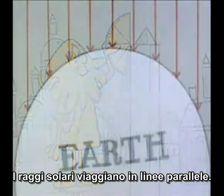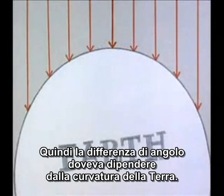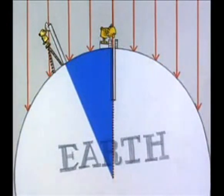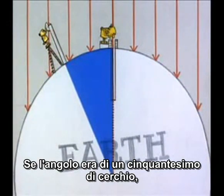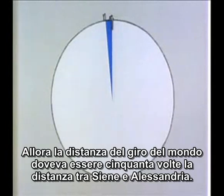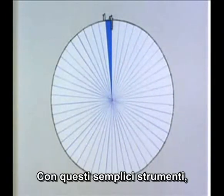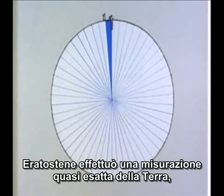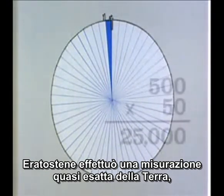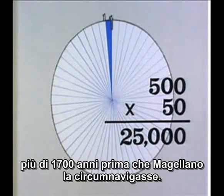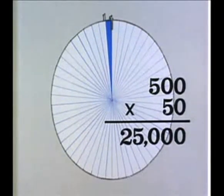Sunbeams travel in parallel lines, so the difference in angle had to result from the curvature of the earth. If the angle was 1/50th of a circle, then the distance around the world must be 50 times the distance from Alexandria to Cyene. With these simple tools, Eratosthenes made this almost exact measurement of the world more than 1700 years before Magellan sailed around it.